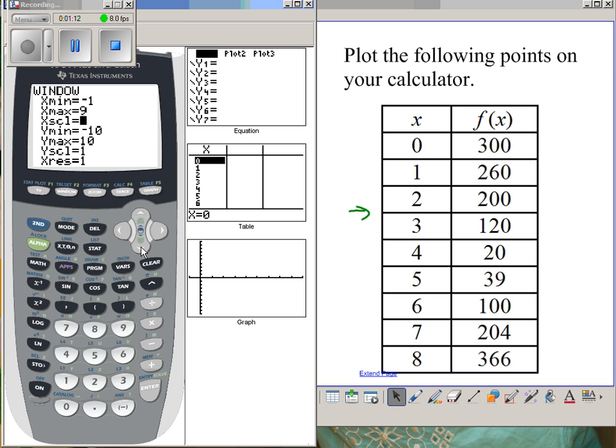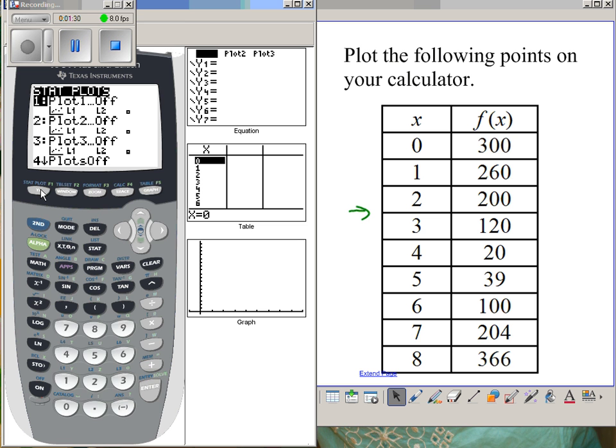For y's I need to go at least as high as 366, so I'll go from -10 to 370, maybe by 20. That'll give me a better scale. I want to turn my plot on, so you go to second y-equals, plot on.